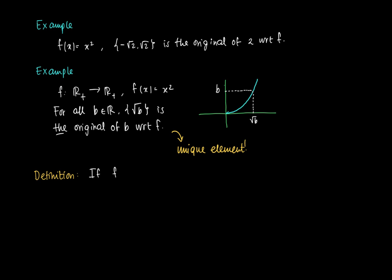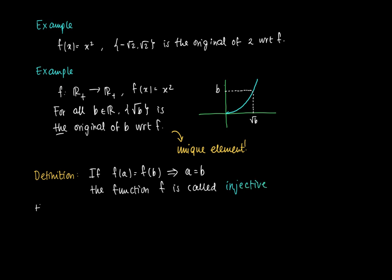The formal definition of injectivity: if f(a) = f(b) implies a = b, then the function is called injective. A function is injective when the horizontal line test shows at most one intersection — meaning there is at most one original per element in the range of f.